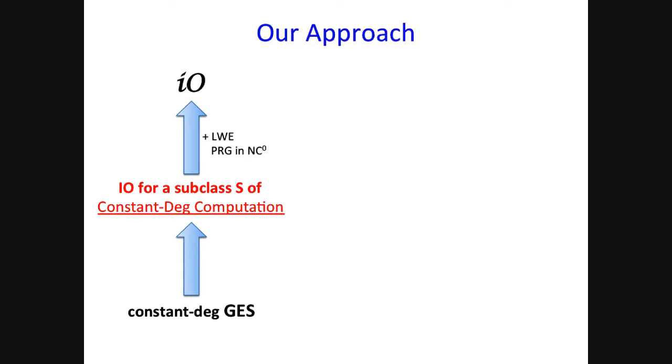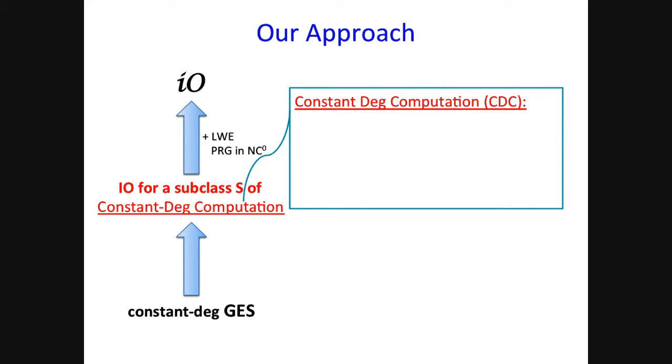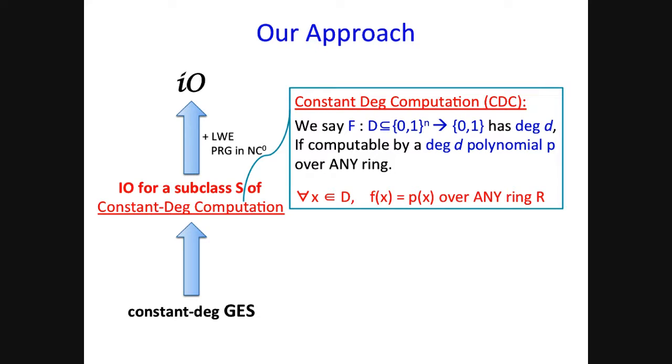Though the assumption is quite strong, our theorem can actually be generalized as a generic way to trade the complexity of PRG for the complexity of GES. And because all the primitives we consider are sub-exponentially secure, in the rest of the talk, I'm going to omit mentioning it explicitly. All right. So how can we go from constant degree GES to IO? We'll do so by going through this intermediate step of building IO for a small subclass S of constant degree computation. Here, by constant degree computation, we mean the following. We say that a Boolean function F has degree D if it is computable by a degree D polynomial. And the punchline is over any ring.